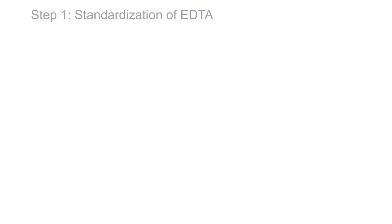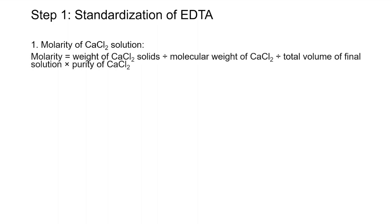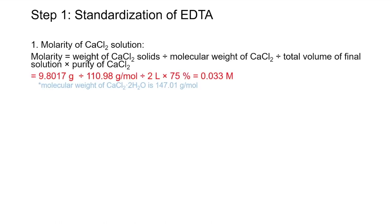To perform the calculation, first you will need to determine the exact molarity of calcium chloride given the weight of CaCl2 solids, volume of diluent, and purity of the compound. Please note, if you are using CaCl2·2H2O, also known as calcium chloride dihydrate, make sure to account for the additional molecular weight.